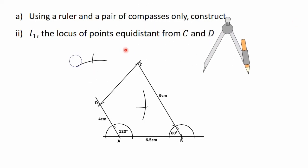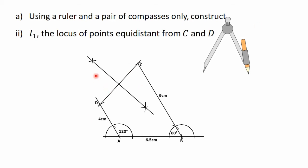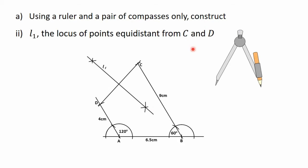I'm going to clean the excess parts of the arcs. To get the perpendicular bisector of the line CD, I'll draw a straight line to join the points of intersection of the two arcs. So we now have the perpendicular bisector of the line CD. The question says that this perpendicular bisector will give us L1.